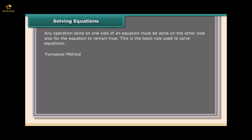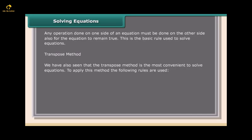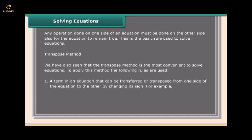The transpose method is the most convenient way to solve equations. A term in an equation can be transferred or transposed from one side of the equation to the other by changing its sign. For example, if x - 12 = 5, then x = 5 + 12. If x + 1 = -2x, then x + 2x = -1.